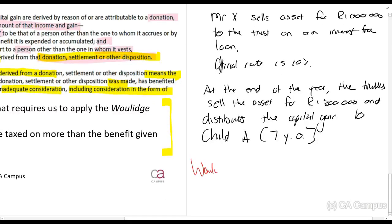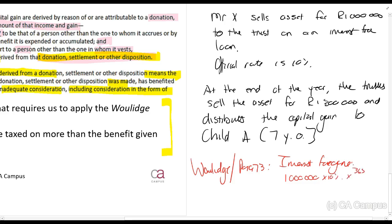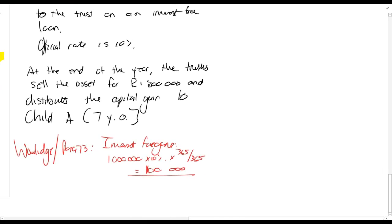Applying the Volach Principle — paragraph 73 — the interest foregone is R1 million times 10%, which equals R100,000 for the entire year. So R100,000 is the maximum amount that Mr. X can be taxed on. The capital gain calculation: proceeds R1.3 million minus base cost R1 million gives R300,000 capital gain.